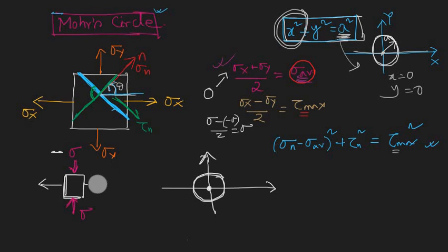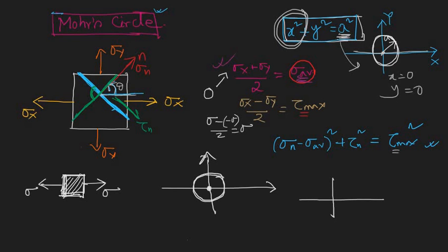Second example: uniaxial stress — only one directional stress σ in the x-direction, nothing in the y-direction. The resulting Mohr's circle touches the y-axis. Simply substitute σ_avg and τmax from the formulas to find the center and radius.